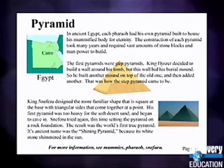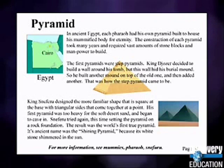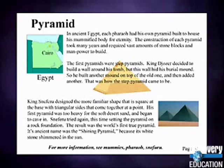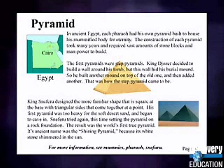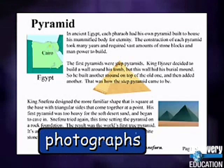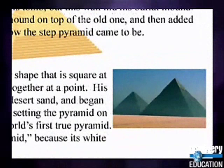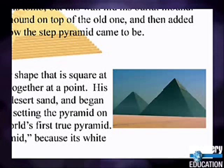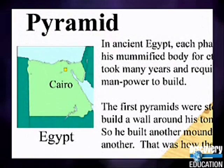An encyclopedia is a great source for finding information about a topic, because encyclopedias have historical, geographical, scientific, and cultural facts. Many entries also include illustrations, maps, charts, and photographs. The pyramid entry has a photograph of a pyramid in Egypt, which helps us visualize what an Egyptian pyramid looks like. There is also a map of Egypt, so we know where the pyramid is located.